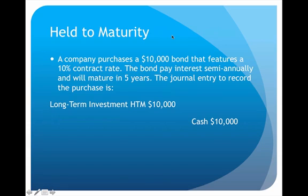So if that's the case, I would have to record a journal entry. Say we have a company and we're going to purchase a bond — a $10,000 bond that happens to have a 10% contract rate. The bond pays interest semi-annually and will eventually mature in five years. We're going to record the purchase. Now you'll notice that this bond entry looks quite a bit different from the bond entries that we've done in the past, because we're no longer selling bonds — we're the one buying the bond.